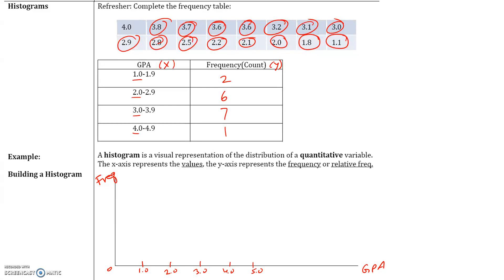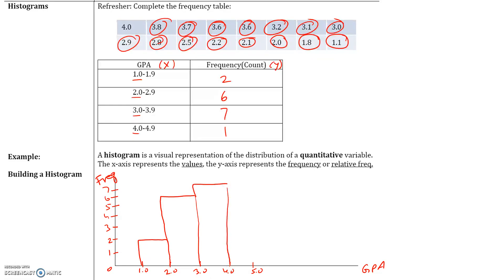The frequency is how many are in each class, so we have 1, 2, 3, 4, 5, 6, and 7 on the y-axis. Let's graph the first class: we have two students, so the frequency is 2, with a GPA between 1.0 and 2.0. We have 6 students with a GPA between 2.0 and 3.0, 7 students between 3.0 and 4.0, and 1 student between 4.0 and 4.9. So there's our histogram.